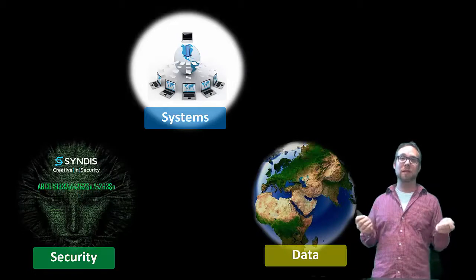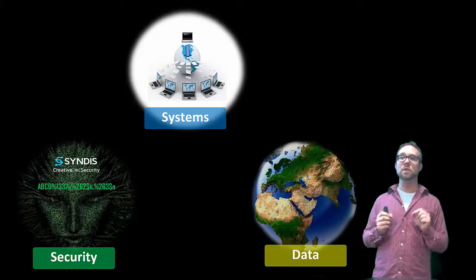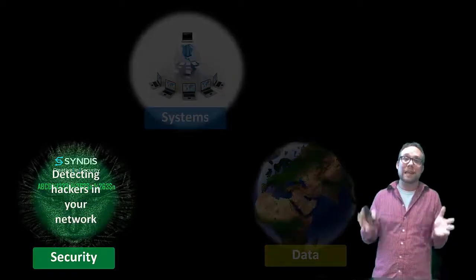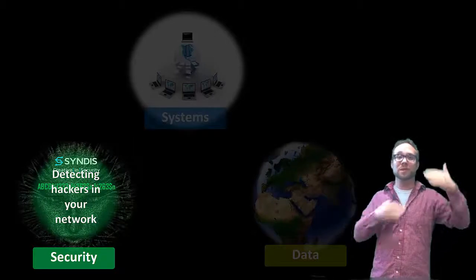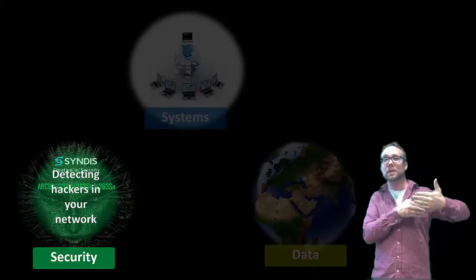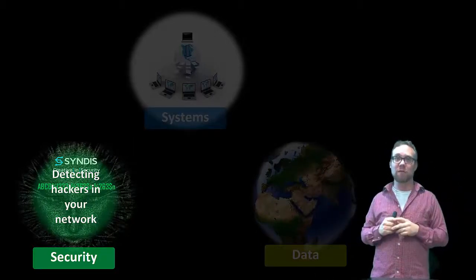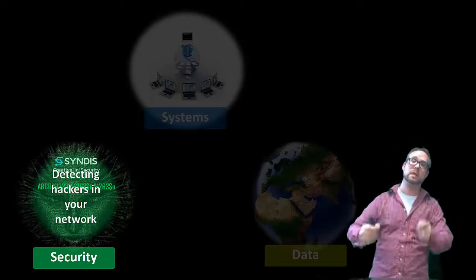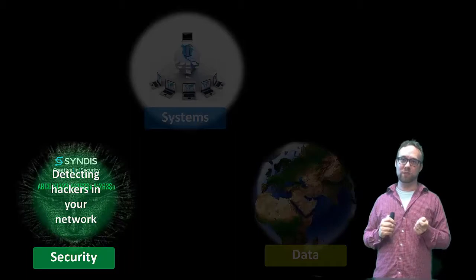The third hat I have is tackling security questions. The particular questions we're looking at from a research angle involve trying to detect hackers that are already in your network. Your outer perimeter is the first thing that falls, and it's the simplest thing to get through. So the question is: once a hacker enters your network, what can they do?